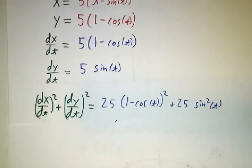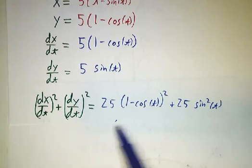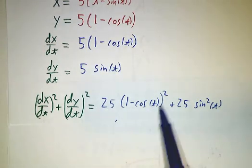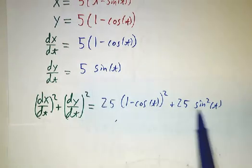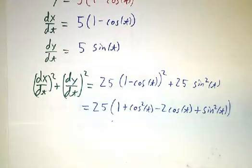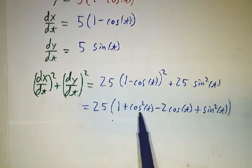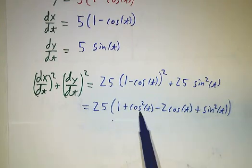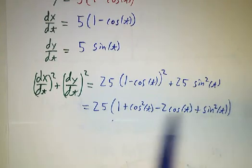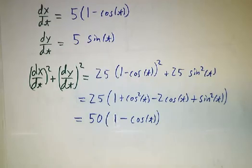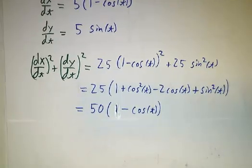And then we want to compute (dx/dt)² + (dy/dt)². Well dx/dt squared is 25 sine squared of t. Then we multiply everything out. This becomes 1 + cos²(t) - 2cos(t) plus our sin²(t). Of course, cos²(t) + sin²(t) = 1. So 1 + cos²(t) + sin²(t) = 2. We factor out the 2 and we apply our double angle formula.